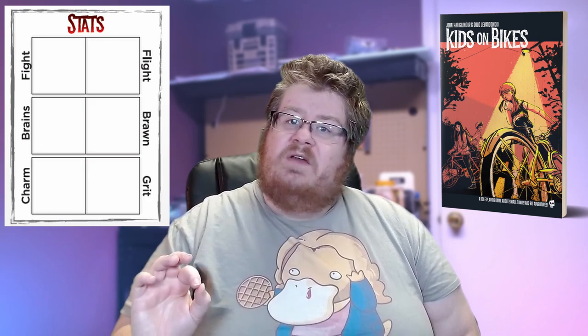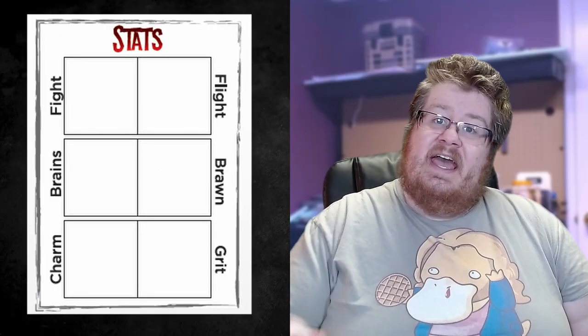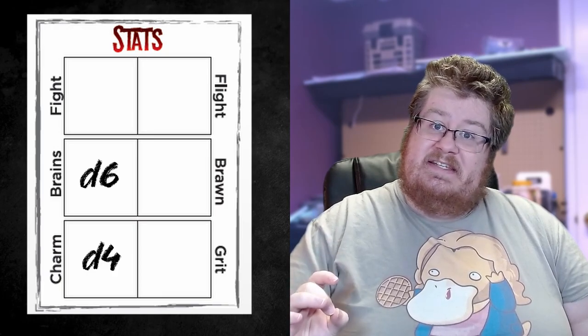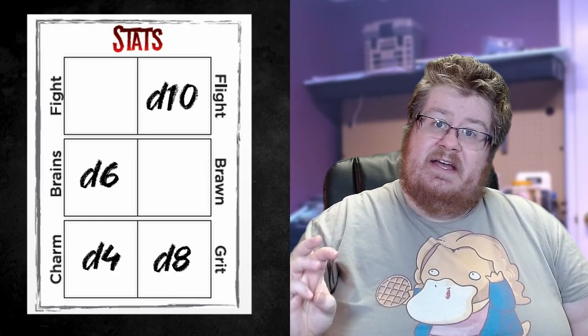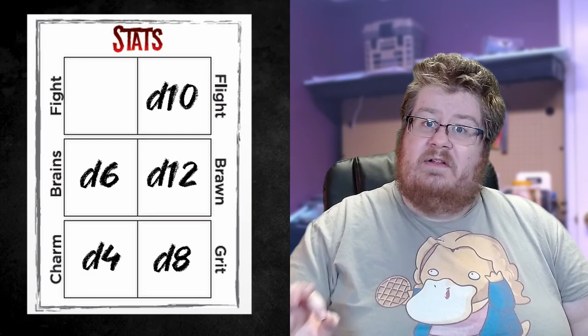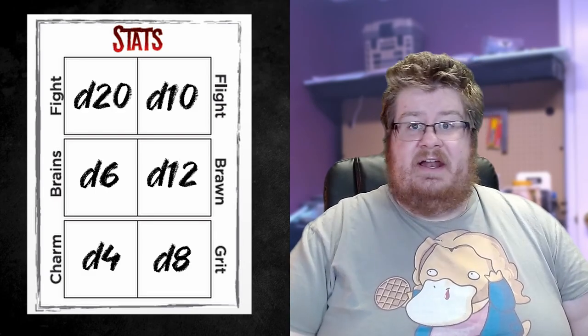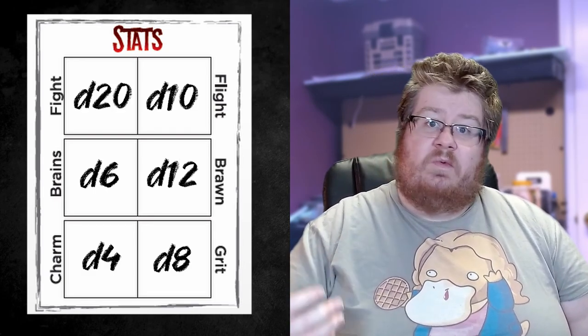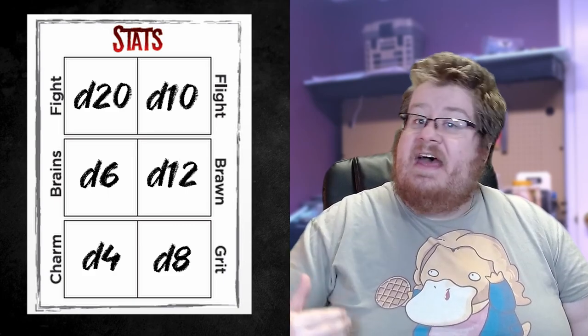Brains is the stat that determines how book smart your character is. Brawn is the brute strength your character has. Fight is your ability to fight, and Flight is your ability to run away. Charm is how socially adept a character is, and Grit is how hard it is to break your character emotionally or physically. Once your six stats are assigned, you're going to select the age of your character.